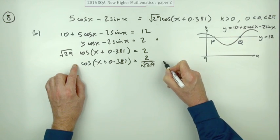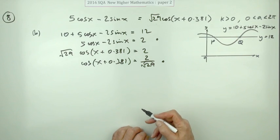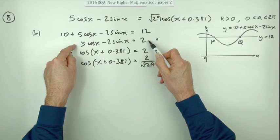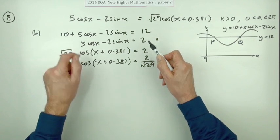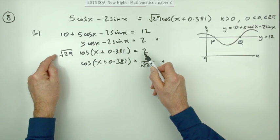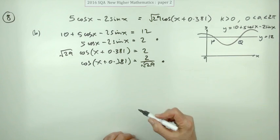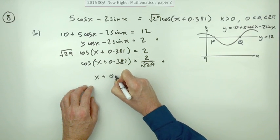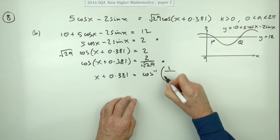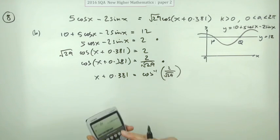So the first step would be: cos of x plus 0.381 equals 2 divided by root 29. Now this is the line where you get the second mark, because you suppose you could just have jumped straight in with this instead of putting that down - you could have simplified it down to the 2 as you wrote it. And instead of leaving the root 29 as you wrote this out, you might as well just have taken it across.